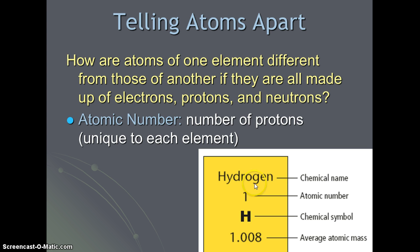We can find the atomic number above the chemical symbol on the periodic table. Because atoms are neutral, the number of positive protons is equal to the number of negative electrons.